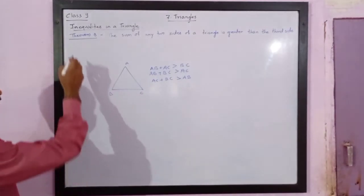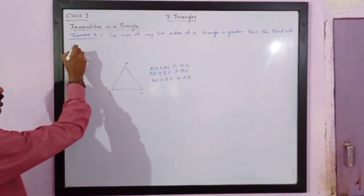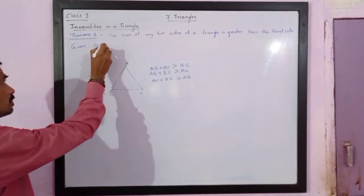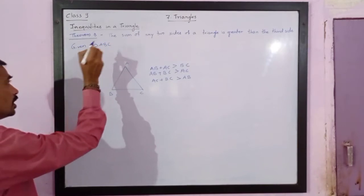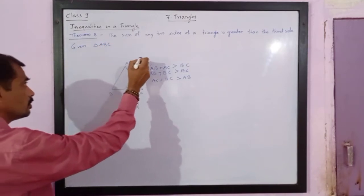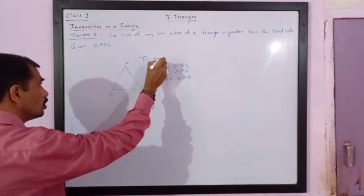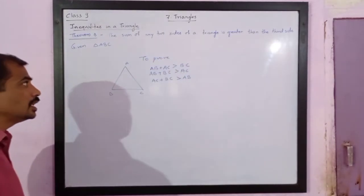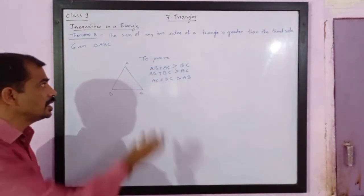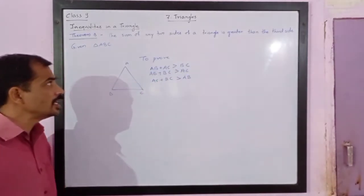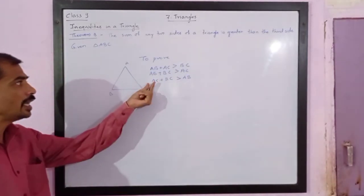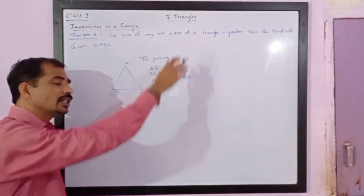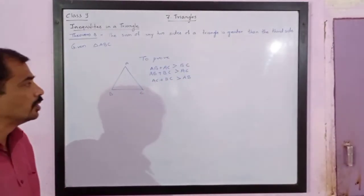We are given triangle ABC — this much is only given — and we have to prove this. To prove: AB plus BC is greater than AC, AB plus AC is greater than BC, and AC plus BC is greater than AB. That is, sum of any two sides is greater than the third side.